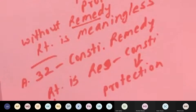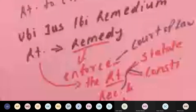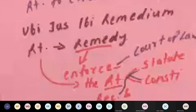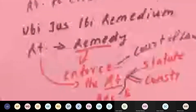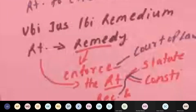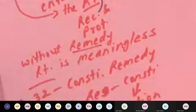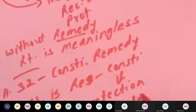We must understand why Article 32 was inserted in the constitution. The constitution has made it clear that where there is a right, that right must get a remedy and must be enforced in the court of law. The right is nothing but an interest which is recognized and protected by law or by the administration of justice. Part 3 of the constitution recognizes and protects the fundamental rights of citizens.